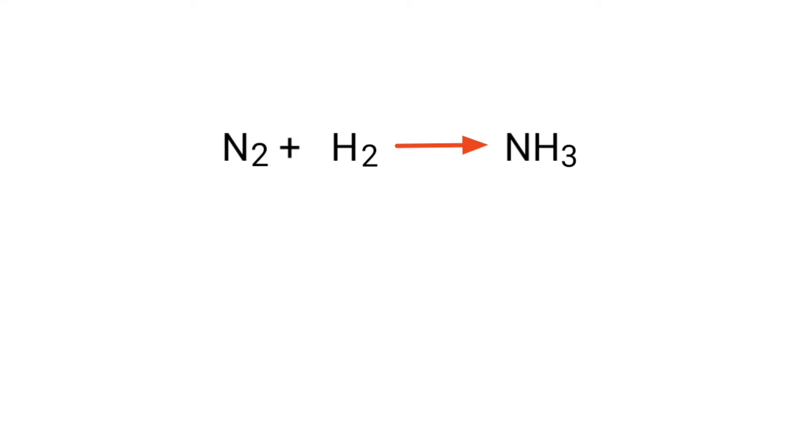Figure out the reducing and oxidizing agents by the rules of assigning oxidation numbers. In this equation, hydrogen has a charge of 0 and is changing into plus 1, so hydrogen is being oxidized. Nitrogen has a charge of 0 and is changing into minus 3, so nitrogen is being reduced.